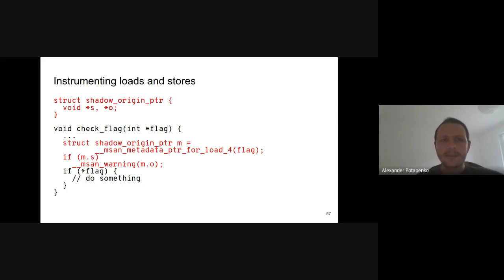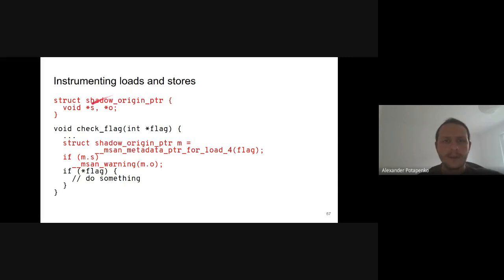For every load and store, the compiler inserts a call to one of the functions starting with msan_metadata_ptr. They differ by size and access type — whether it's a load or store — and there are separate versions for accesses with statically unknown sizes. Each function returns a struct shadow_origin_ptr containing both the shadow and origin pointers. This is done because the code calculating shadows and origins is practically the same and we don't want to do the same job twice.